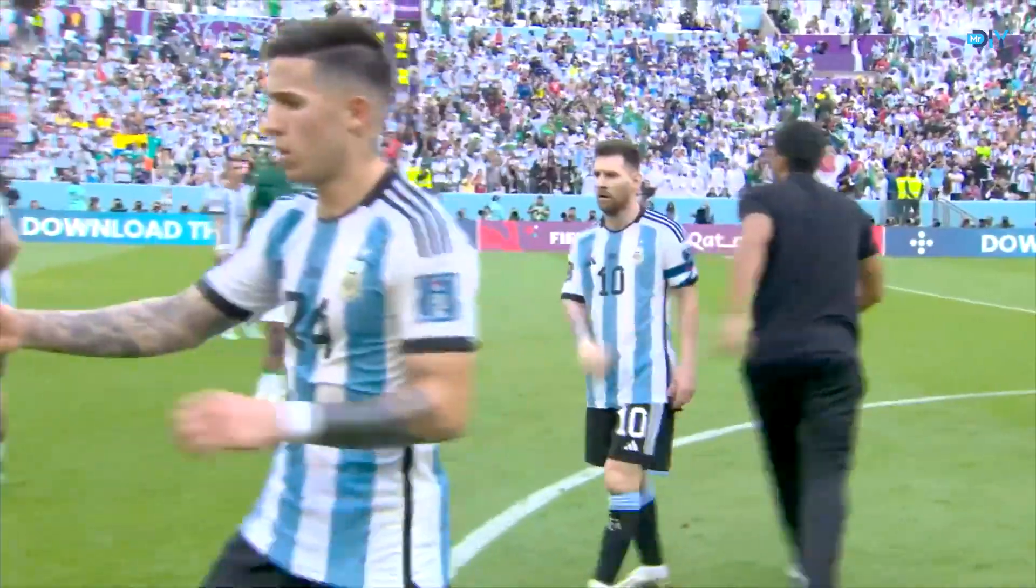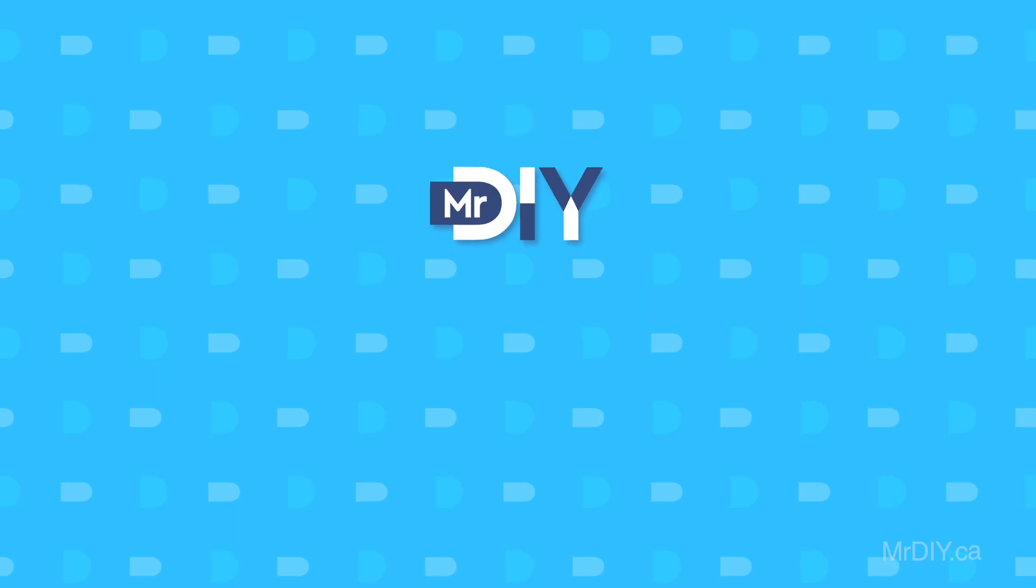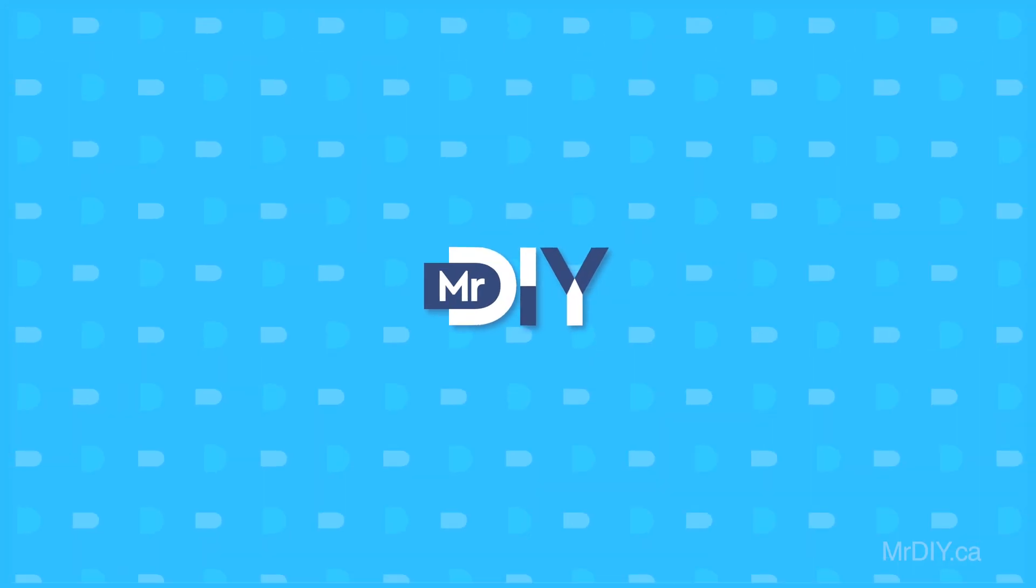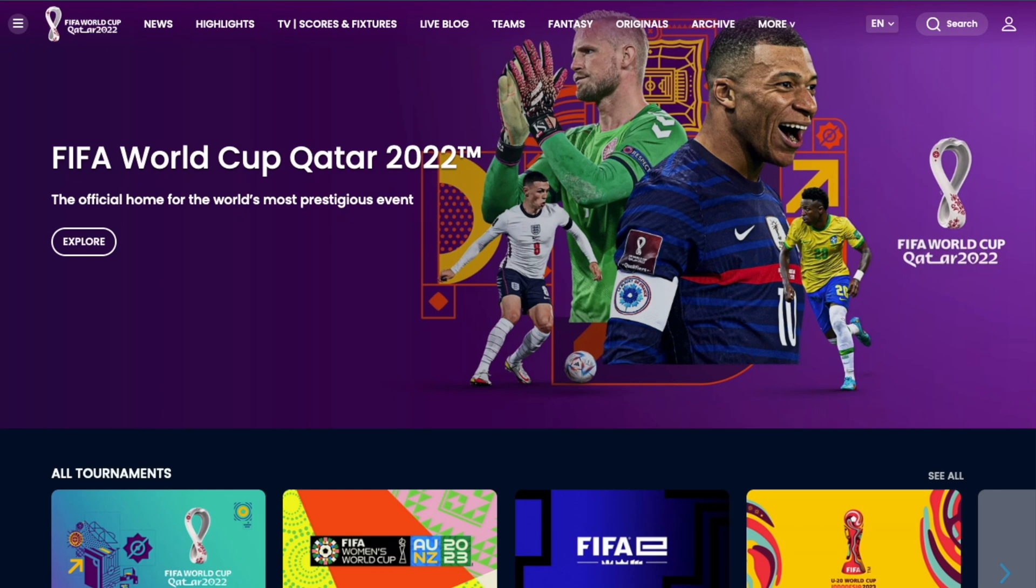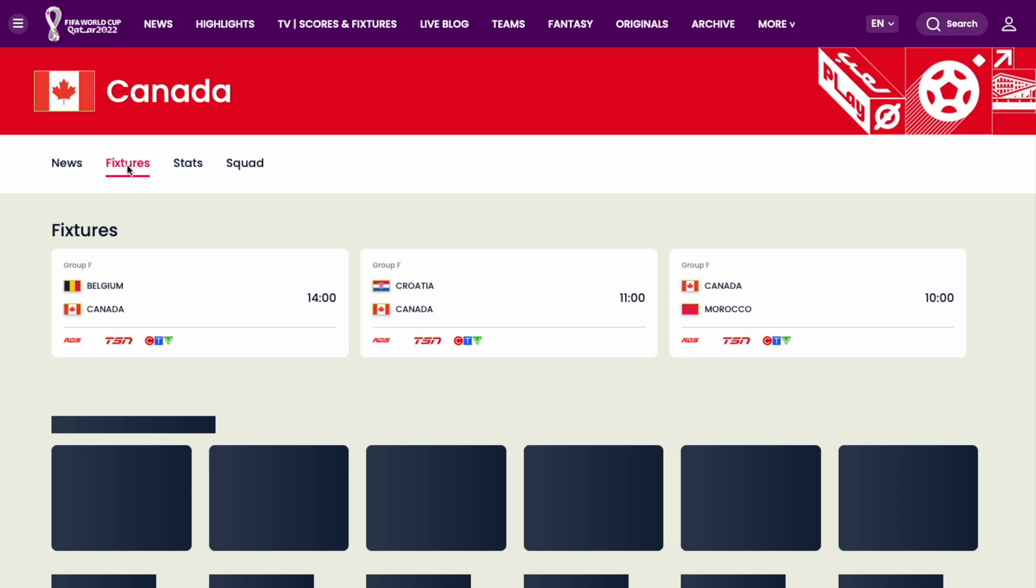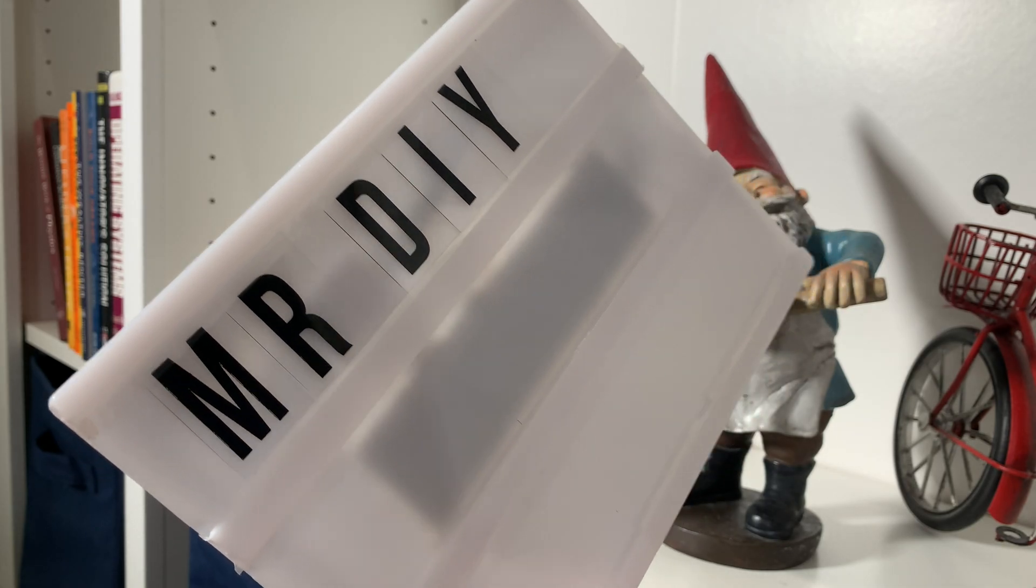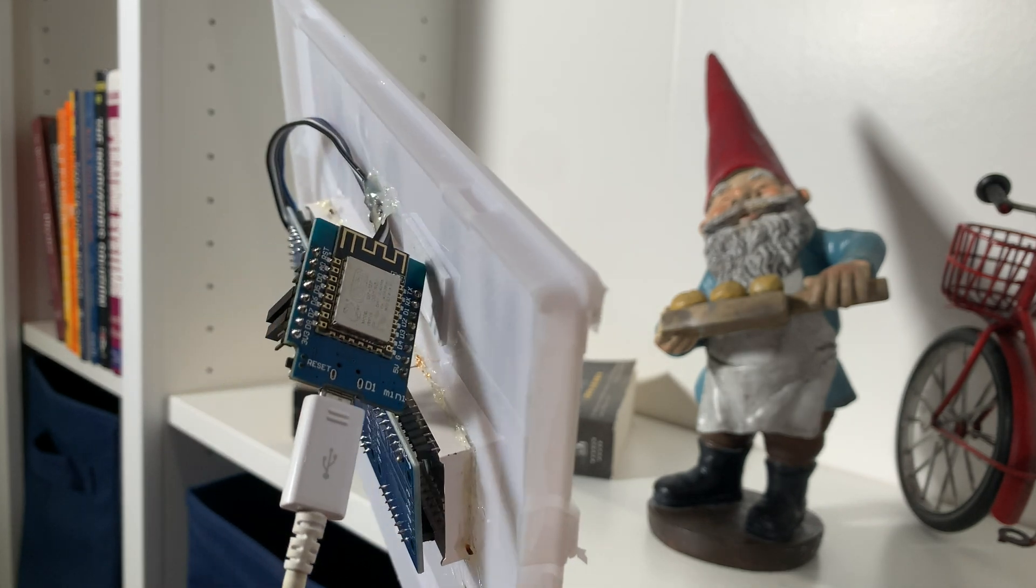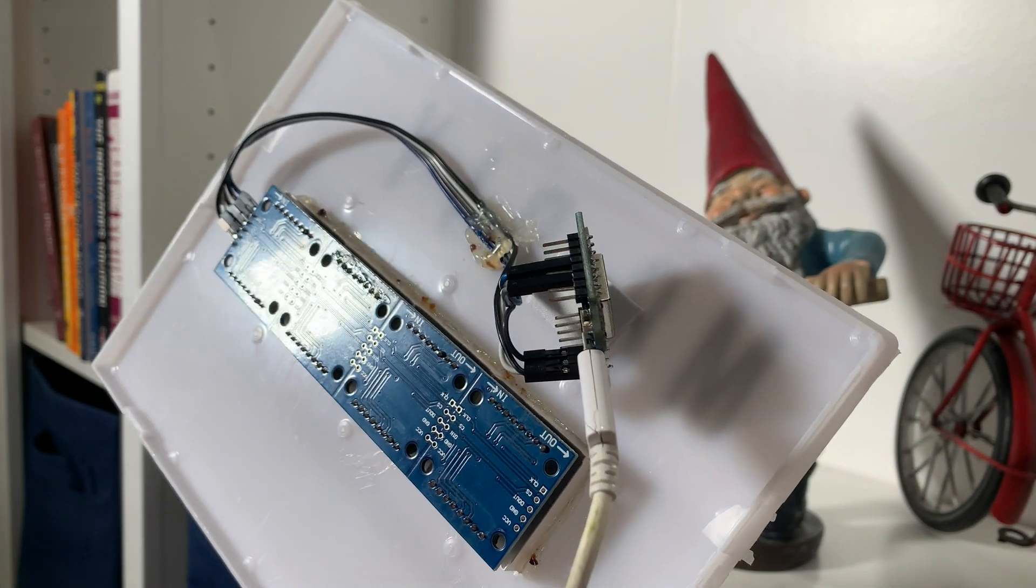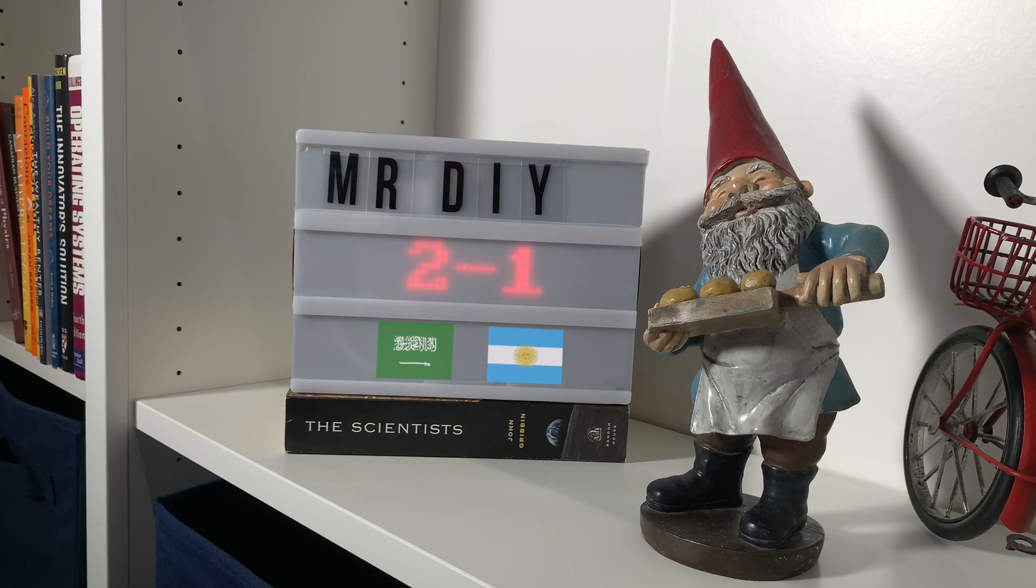Saudi Arabia just defeated Argentina, so I guess anything is possible. Every four years FIFA happens, and every four years I search the web looking for a free reliable API I can use to fetch scores. I found it. Using this API, I was able to build this using a WEMOS D1 mini and an LED matrix. Each minute it goes online to get the updated scores and displays them.